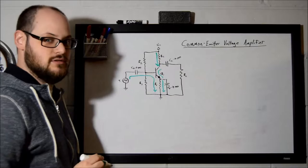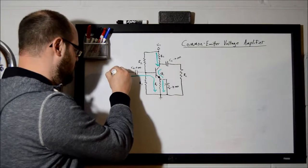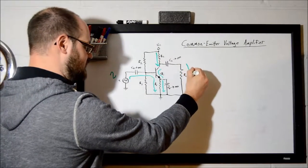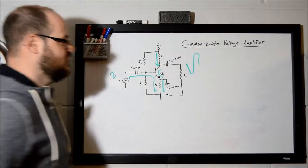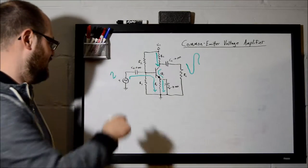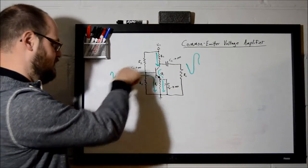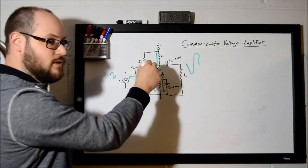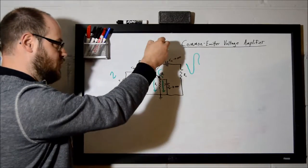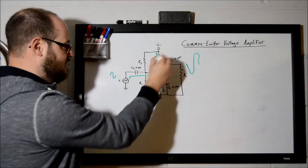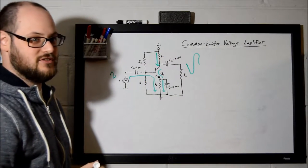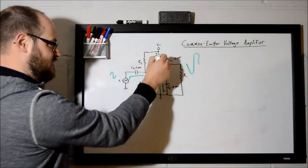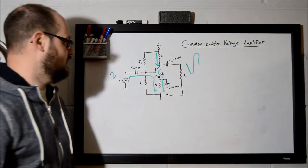By the way, a common emitter configuration is inverting, meaning if your smaller input signal goes like so, your output signal will be inverted by 180 degrees and it will be larger but inverted. Why is that? Well, because as more current flows here, which turns the transistor on more, causing more current to flow there, what happens? You drop more voltage across that resistor. So, as this signal is increasing, this signal is decreasing. So, this is the element that causes the common emitter configuration to invert.